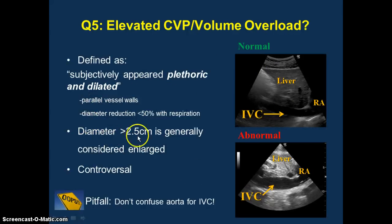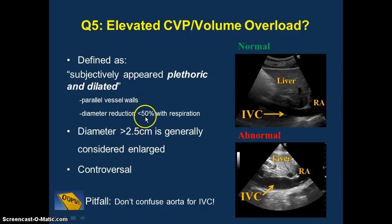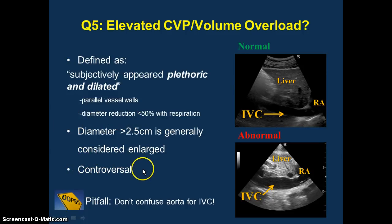The numbers to keep in mind: a very large IVC is 2.5 centimeters or greater, and you're looking for at least a 50% collapse in spontaneously breathing patients. This is very controversial, but I have clinically found it to be very useful. Make sure you don't confuse the IVC for the aorta.